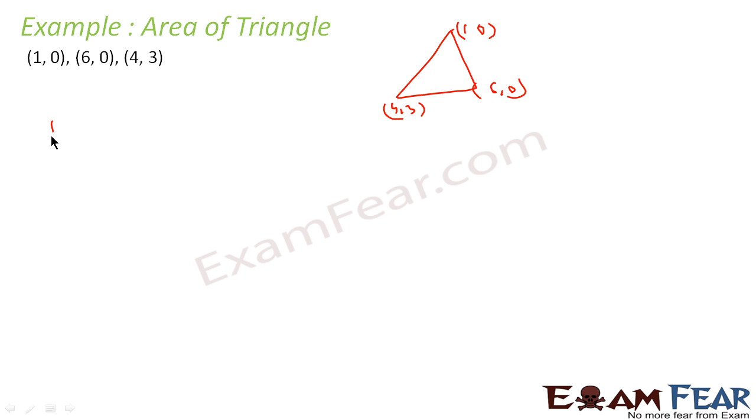And the area of triangle formula is very simple: 1 by 2 into x1, y1, 1, x2, y2, 1, x3, y3, 1. Now what is x1, y1? The first vertex 1, 0, x2, y2 second vertex 6, 0, and x3, y3 is 4, 3. So this is my area of triangle. I have to just solve this.